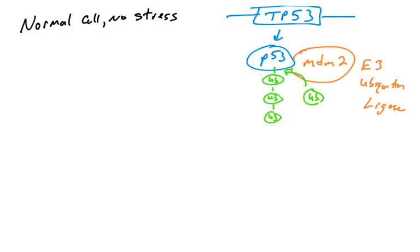So p53 here now becomes polyubiquitinated or ubiquitinated. And when p53 is polyubiquitinated, that is a signal to send the proteins into the proteasome and destroy them.